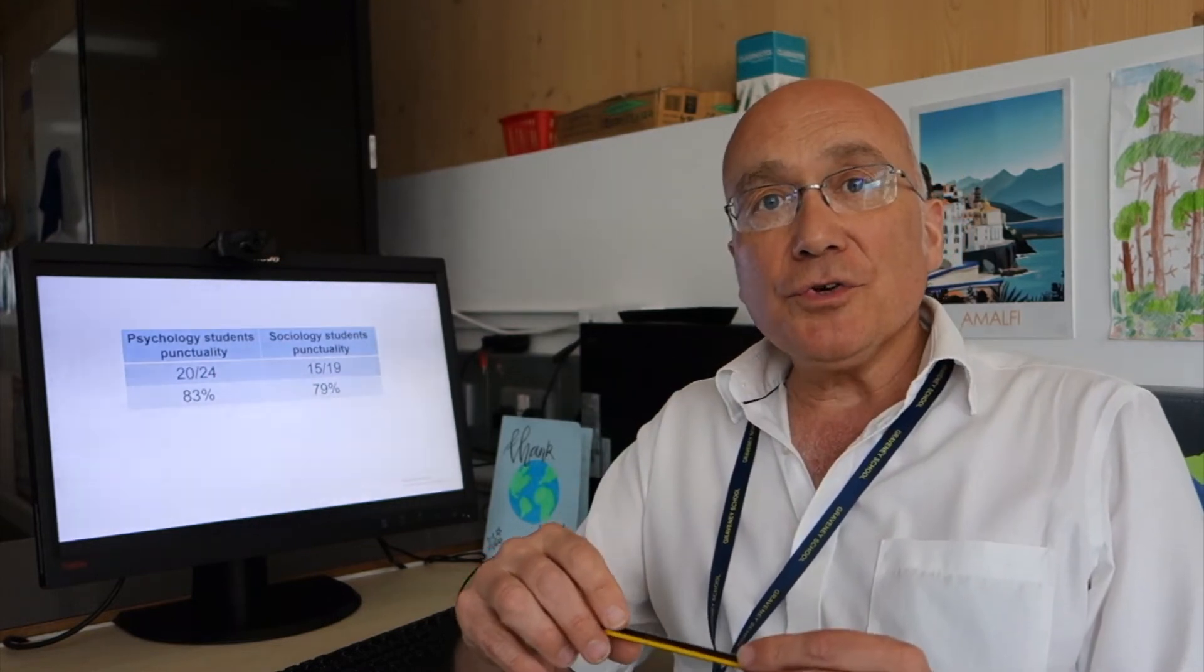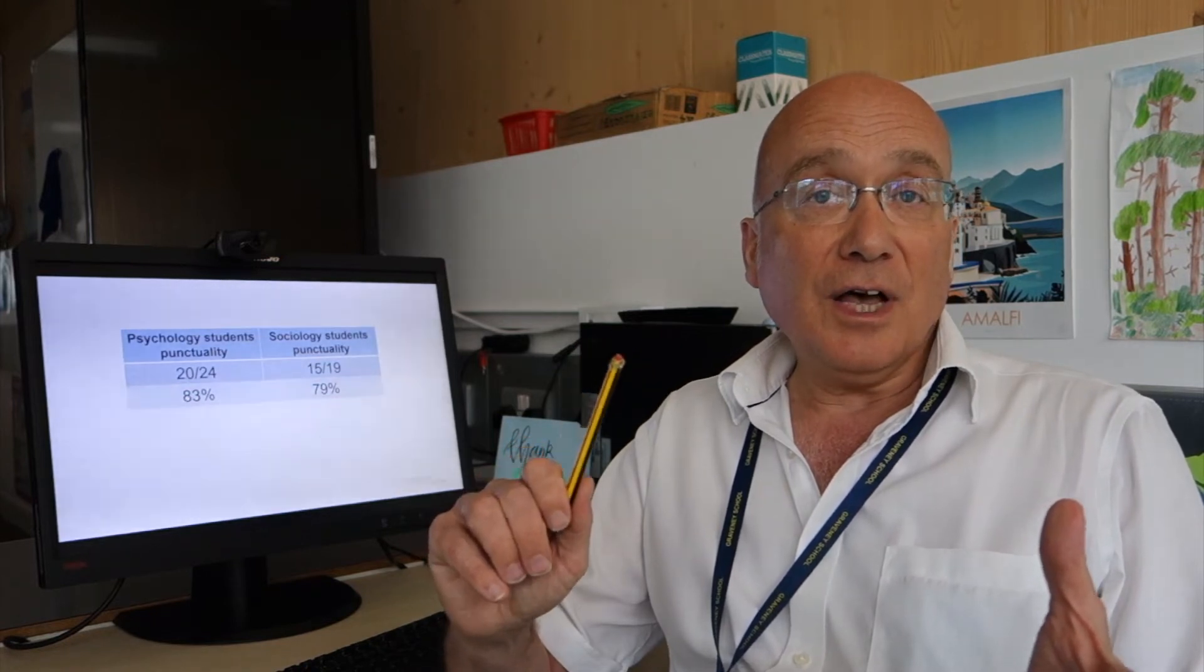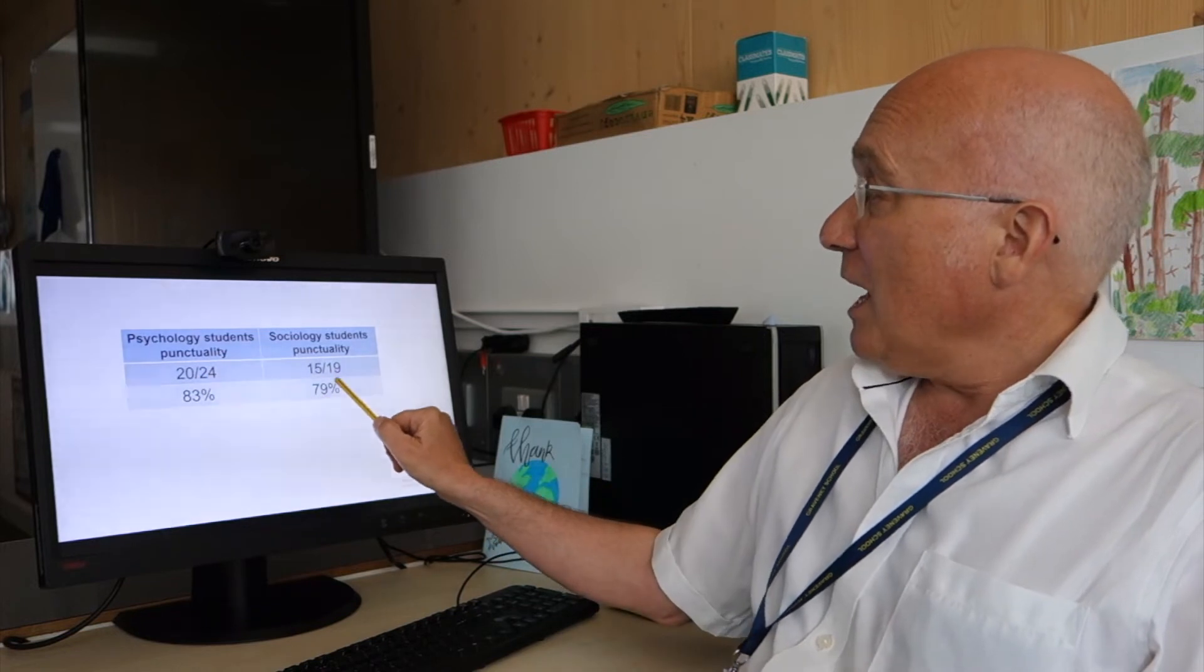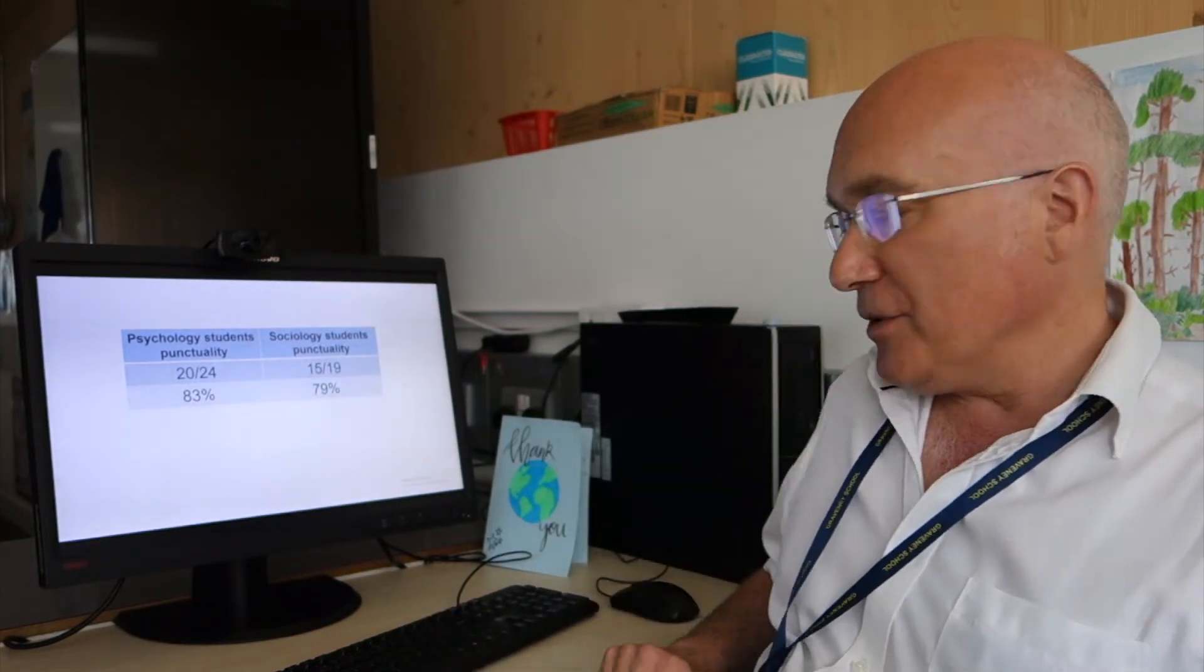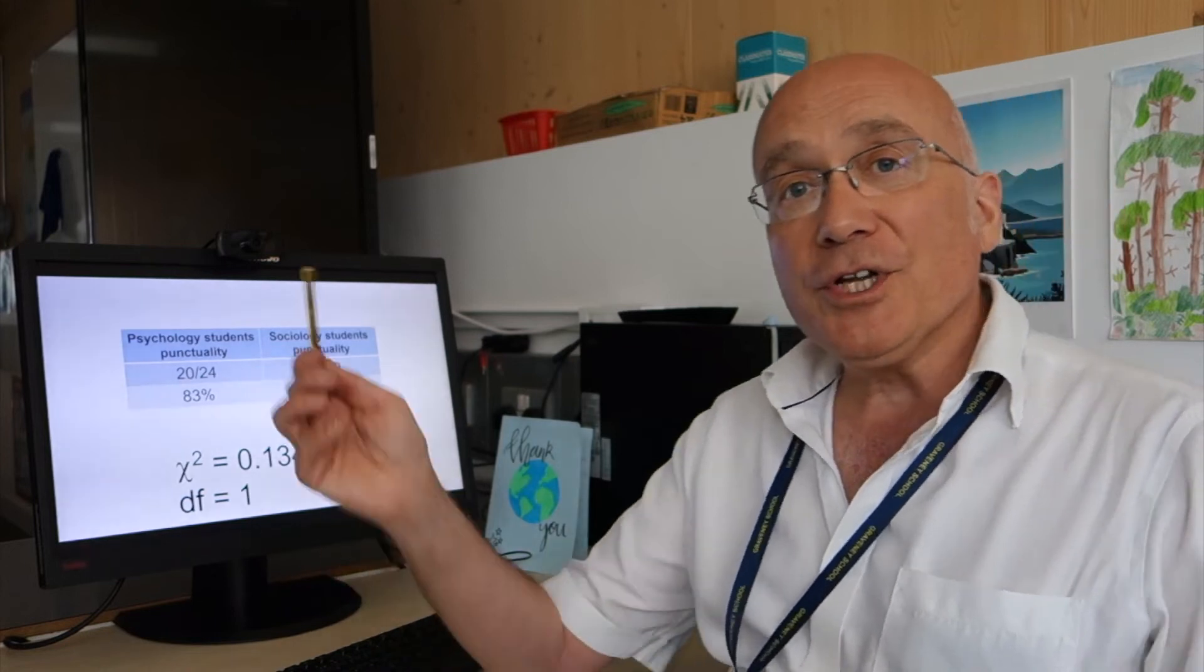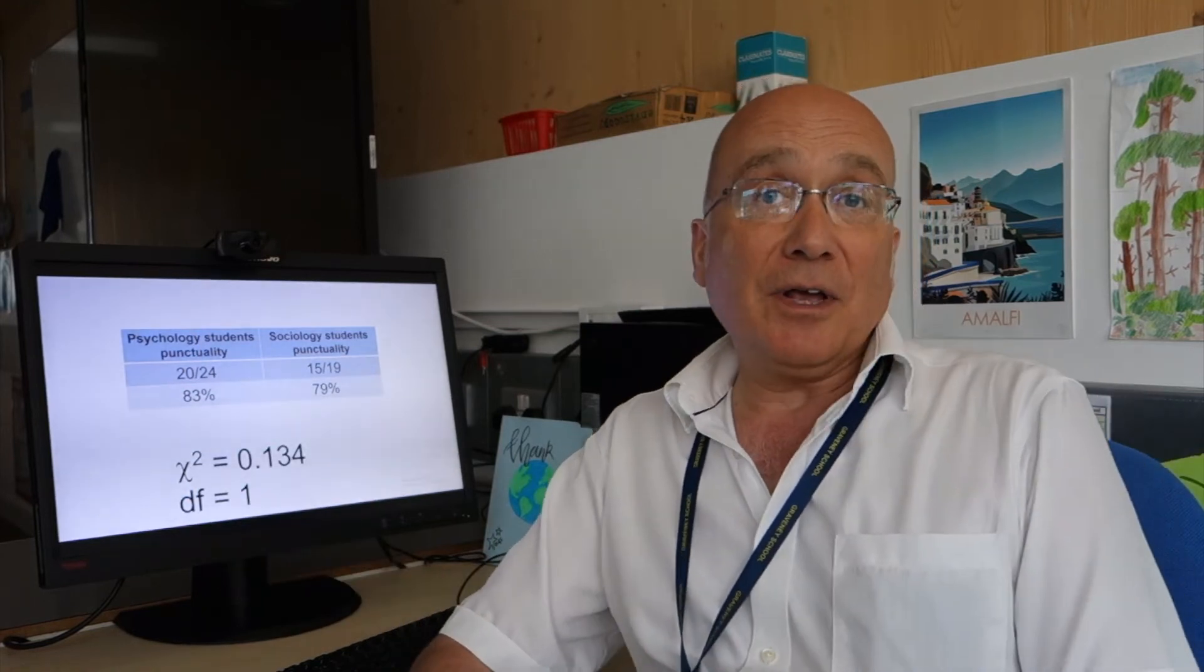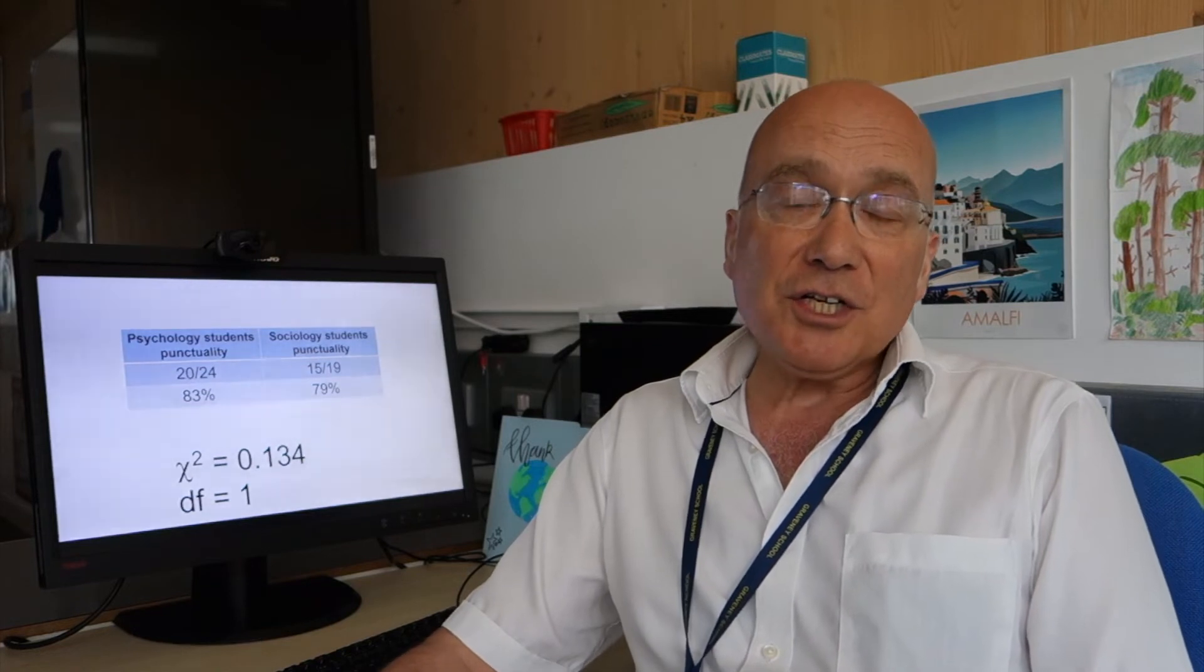Let's go back to my little experiment on psychology and sociology students. And I got some data from that experiment, didn't I? Which is here, that I got 20 out of 24 of my psychology students were punctual and 15 out of 19 of my sociology students were punctual on that particular Monday morning. Right, so I calculated chi-squared for this and it came out that chi-squared is 0.134. You don't need to be able to calculate that. And the degrees of freedom is 1. You don't need to be able to calculate that.